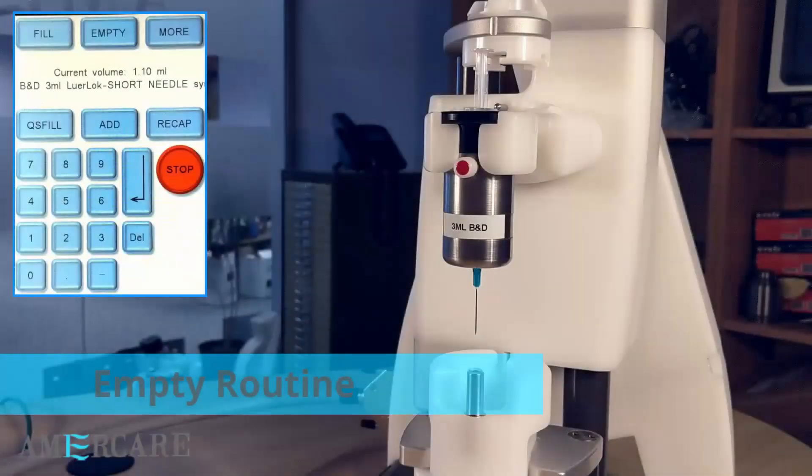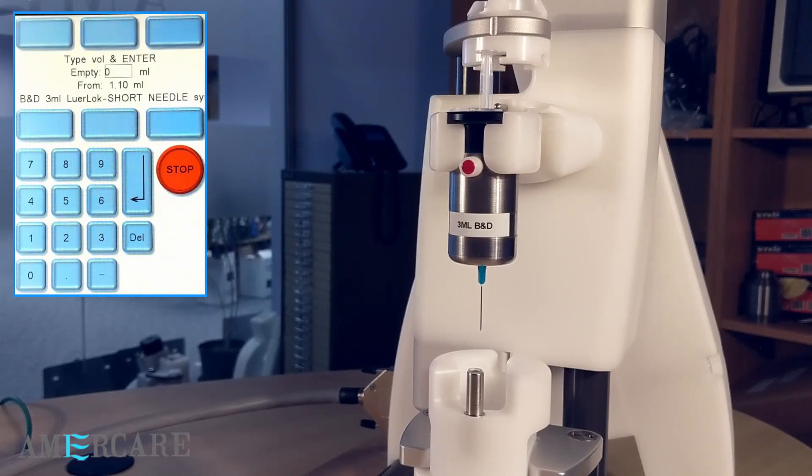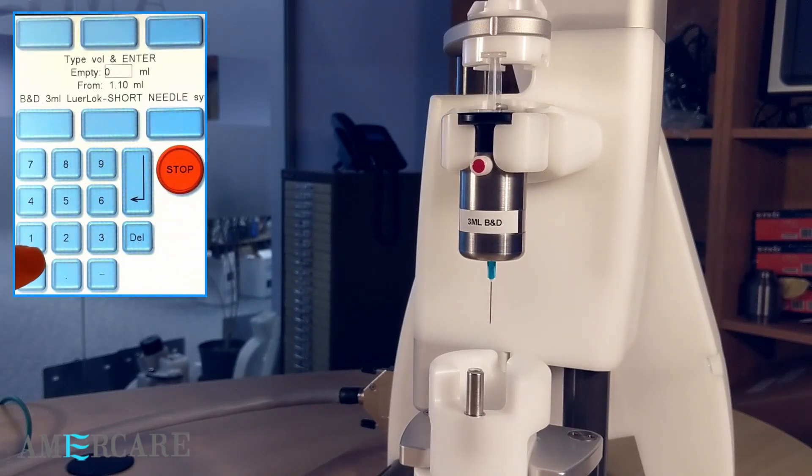With the empty routine, you can partially or fully empty the syringe. Press empty. The syringe will move into the empty position. Type in the amount to empty and press enter.